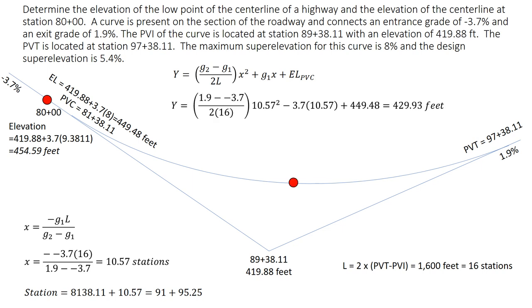Plugging in our values here. Our x, we just calculated that previously of 10.57 stations. That's the distance from the PVC to that low point.